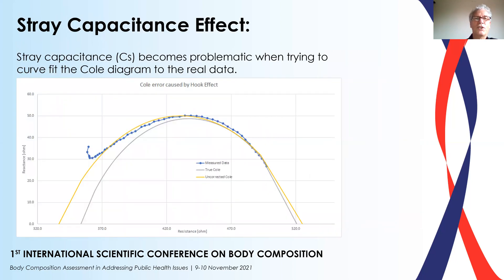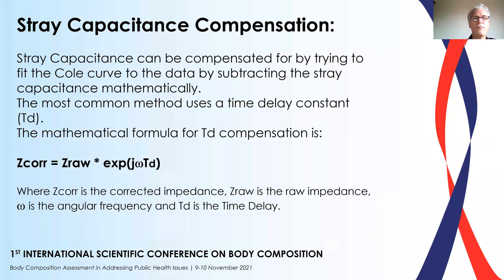In this diagram, we can show you exactly the problem. The blue dotted line is the actual physical measurement of the reactance against resistance at different frequencies. The grey line is a true Cole diagram, but if you look at the curve-fitted line — the yellow line — you can see that the R-infinity and R0 values would be quite different from what would be a true measurement. Stray capacitances can be compensated for by trying to fit the Cole curve to the data by subtracting the stray capacitance mathematically.